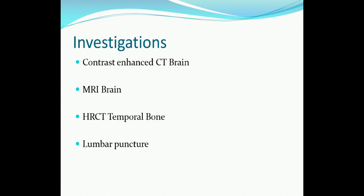Regarding investigations, you can write these four investigations for all six intracranial complications of otitis media. The first is contrast-enhanced CT scan of the brain. Never just say CT or MRI — you must specify the part of the body to be scanned and whether it is plain or contrast-enhanced CT or MRI.